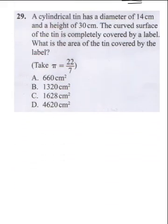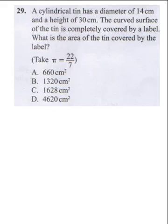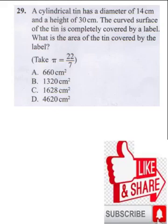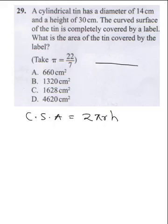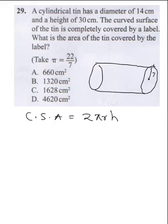Question 29 says a cylindrical tin has a diameter of 14 cm and a height of 30 cm. The curved surface area of the tin is completely covered by leather. What is the area? The formula for curved surface area is 2πr multiplied by h. Because the diameter is 14, the radius is 7, and the height is 30.